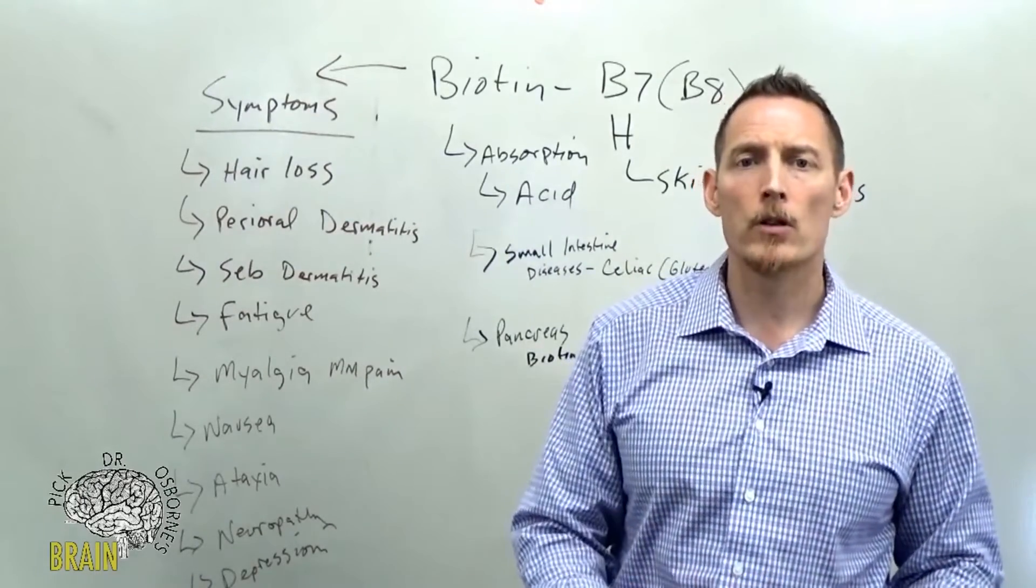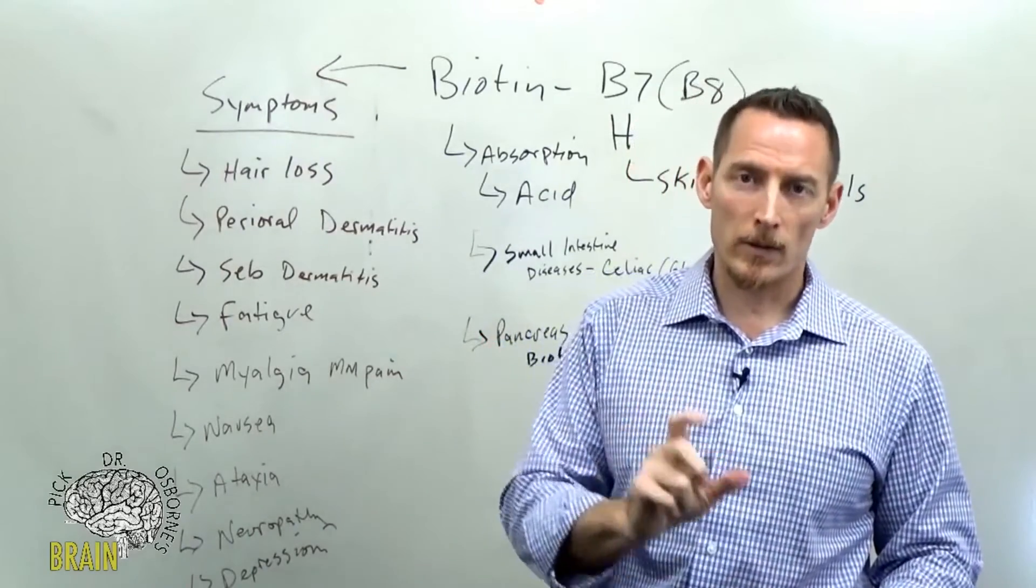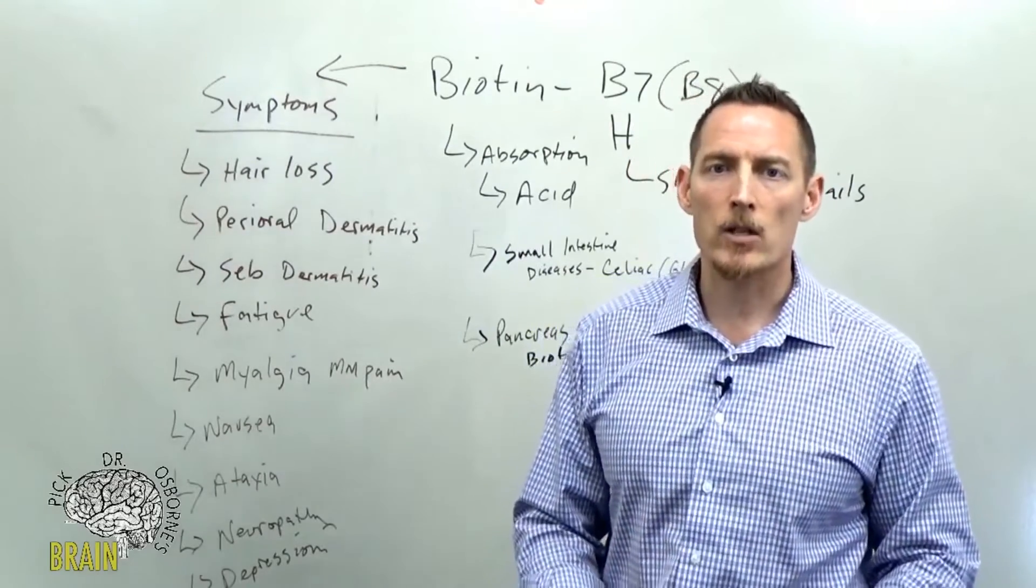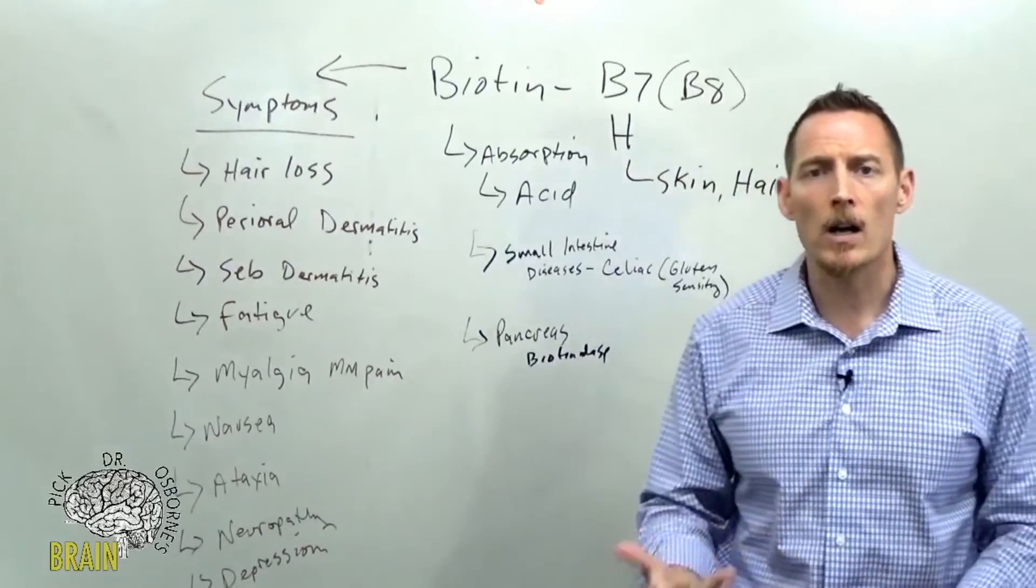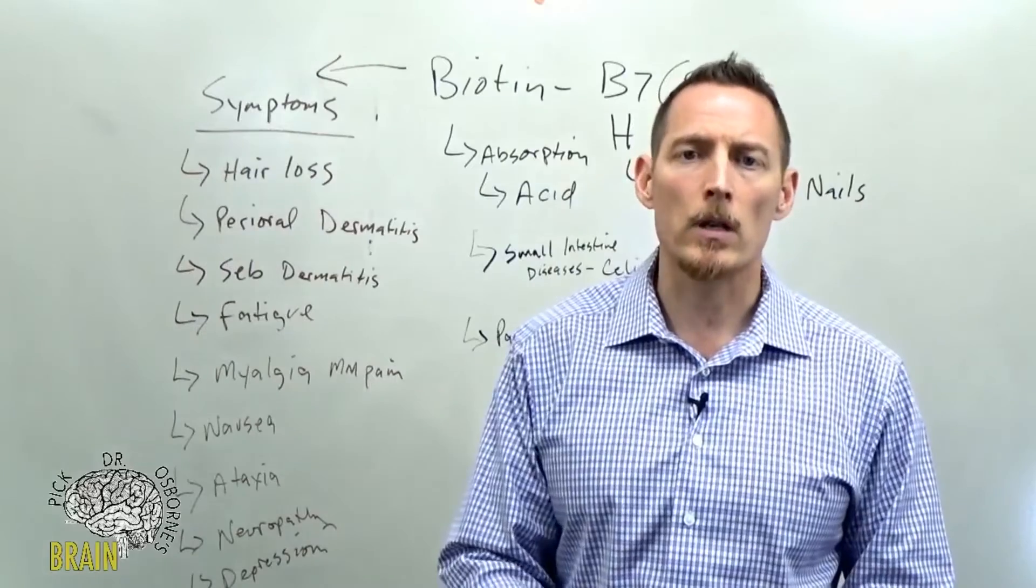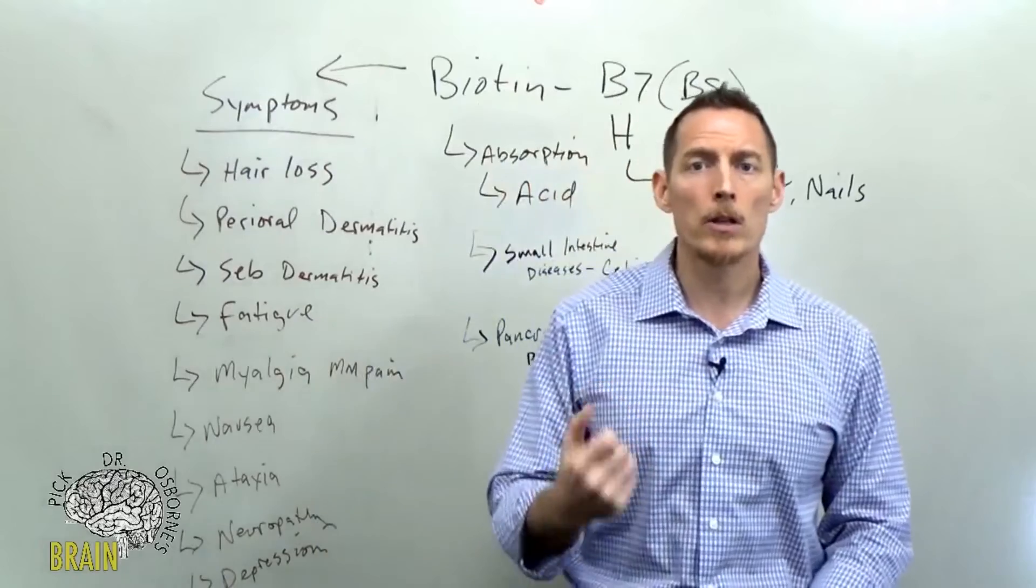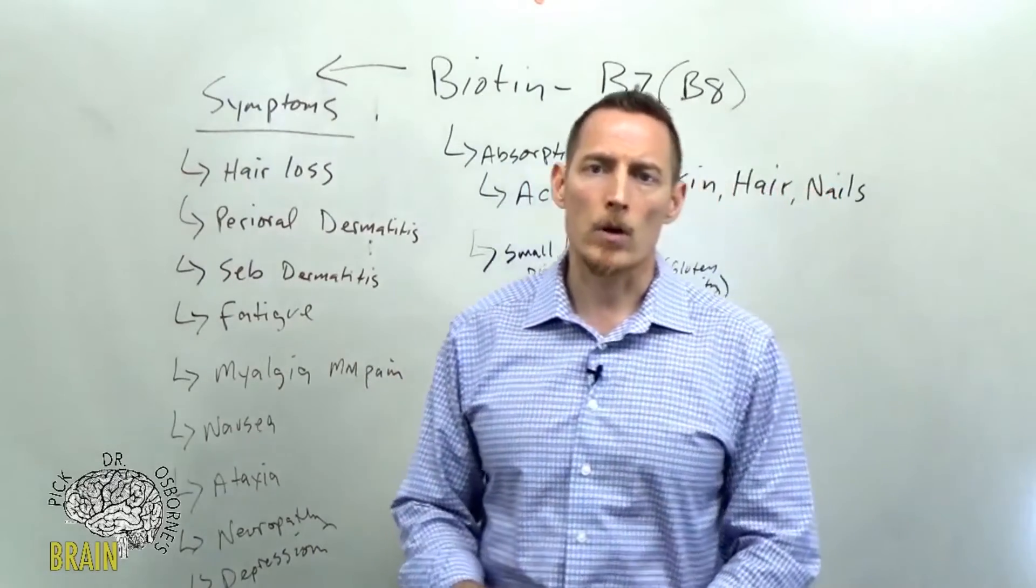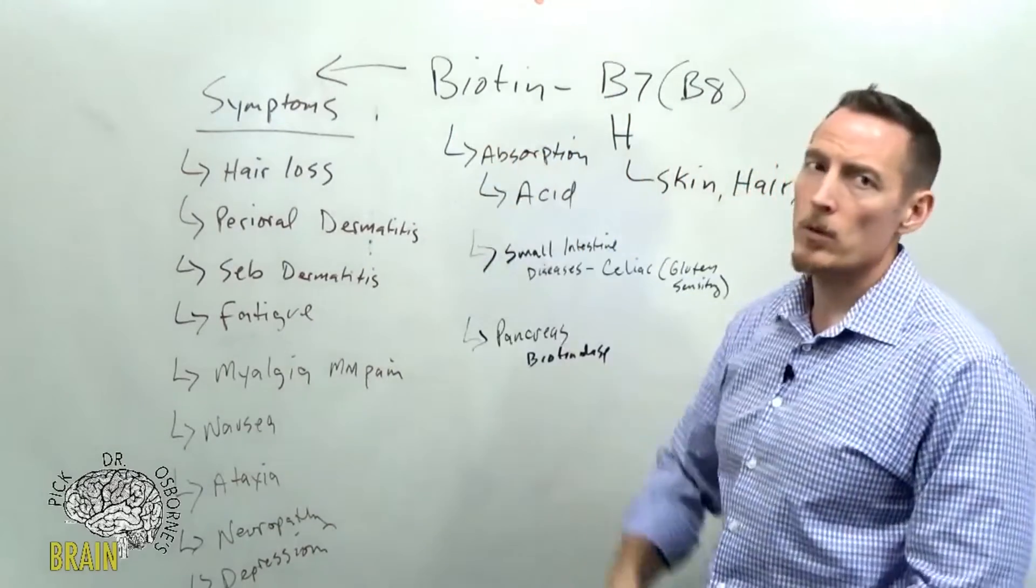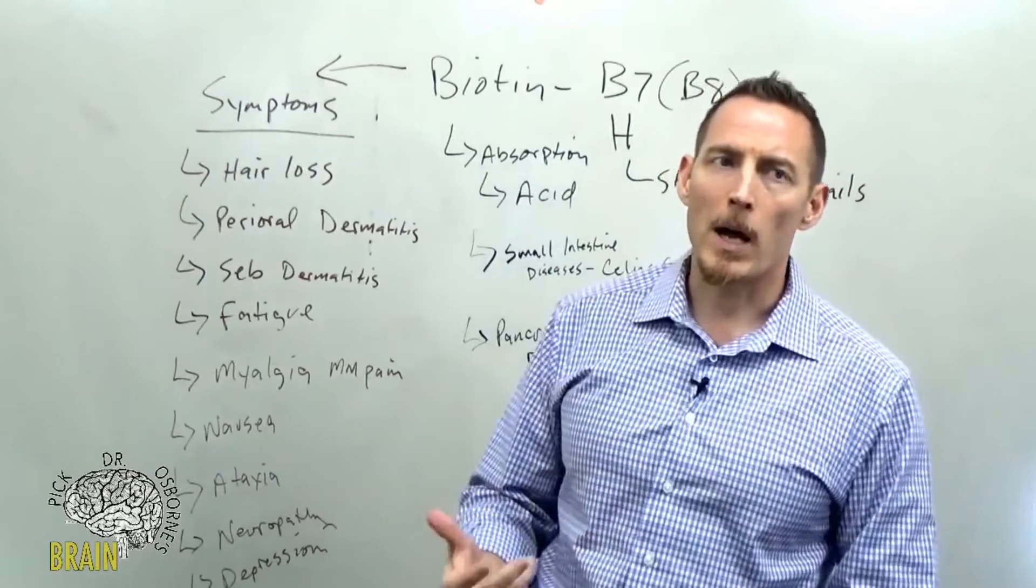That can create small intestinal inflammation leading to damage to the brush border. Part of where biotin is absorbed is by the brush border of your small intestine. Celiac disease's hallmark symptom is that the brush border of the small intestine is eroded—that's what villus atrophy is. There are other diseases and things that can cause villus atrophy and erosion of the brush borders. In some people, soy protein can do it, parasite infection can contribute to brush border erosion, and corn can contribute to brush border erosion. These are all potential possibilities that could lead to your inability to properly absorb biotin.